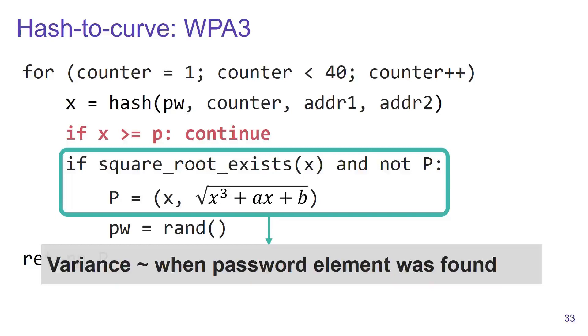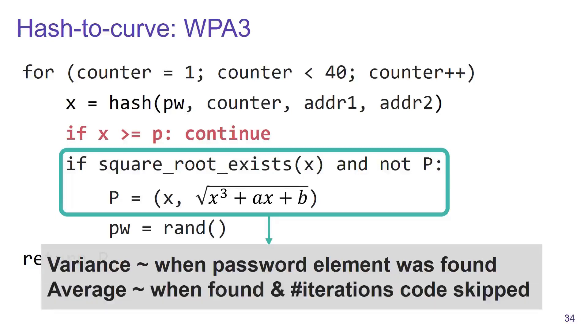The way we did this is by realizing that the variance of the execution time still depends on when the password element was found. On top of that, the average execution time depends on when the password was found and on the average number of iterations where the highlighted code was skipped.